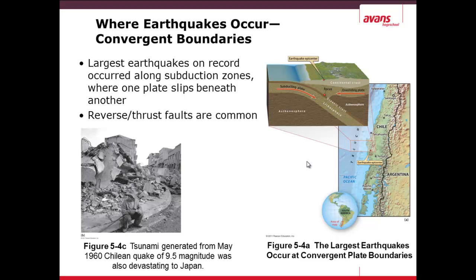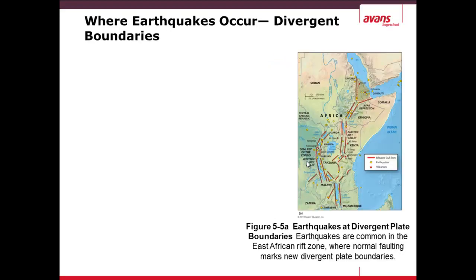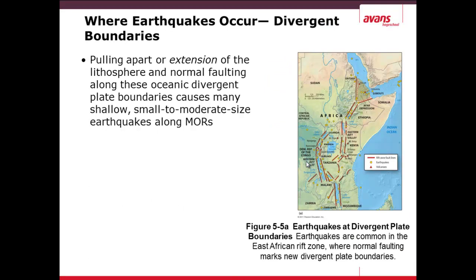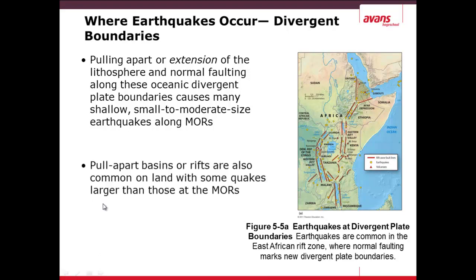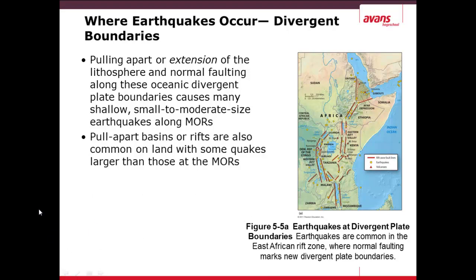Earthquakes can also occur at divergent boundaries. A divergent boundary involves the pulling apart and extension of the lithosphere along a fault between two plates. These normally cause small to moderate-sized earthquakes along the mid-oceanic ridges, or MORs. They pull apart basins creating rifts, which are more common on land and are sometimes larger than those at the mid-oceanic ridges.